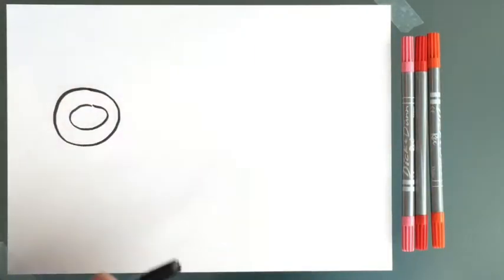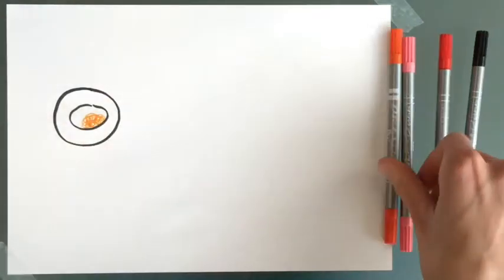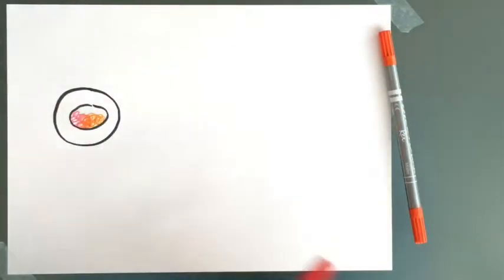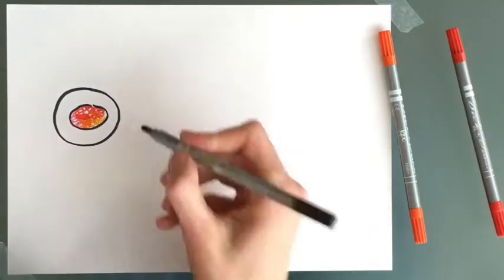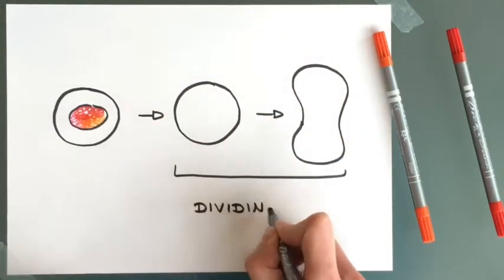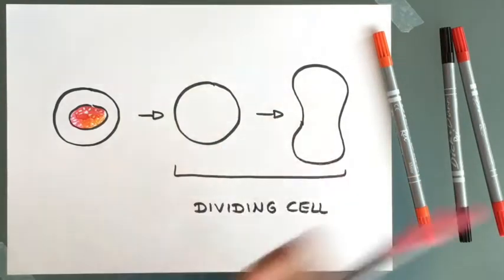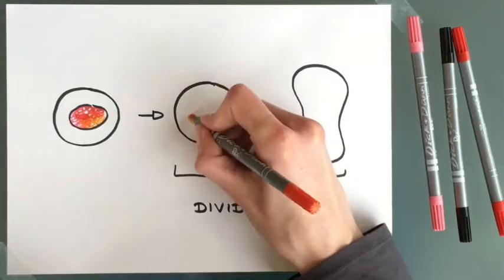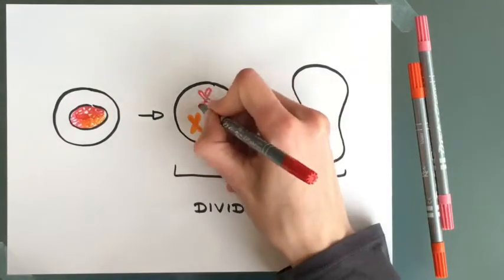Chromosomes are normally spread out as networks of long threads that fill the entire volume of the cell nucleus. However, when a cell prepares for cell division, chromosomes are replicated and folded into compact X-shaped bodies that can be transported to the daughter cells.